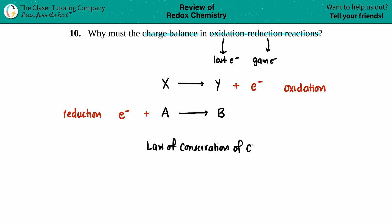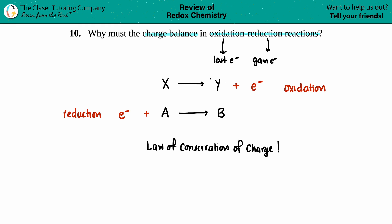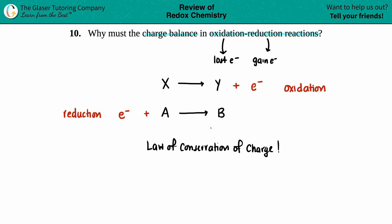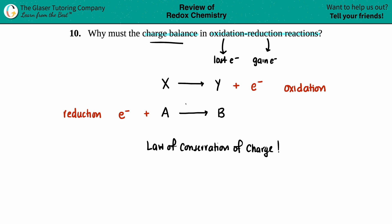The law of conservation of charge states that whatever the charge was on the reactant side has to be the same charge on the product side. In order for that to hold, it is because of those electrons that were lost and gained — that is the only way those charges change. That is why the charge has to balance.